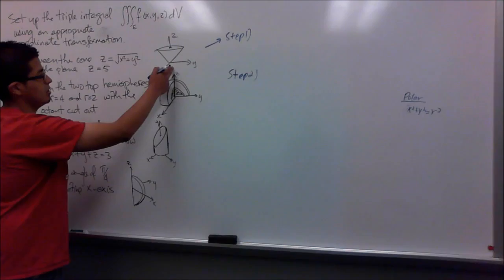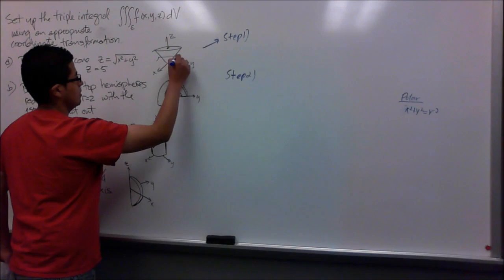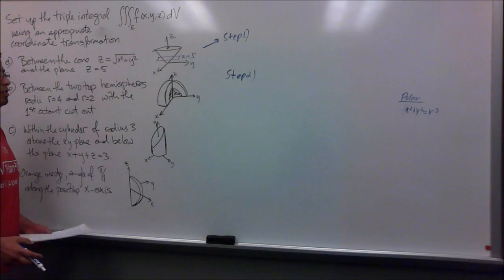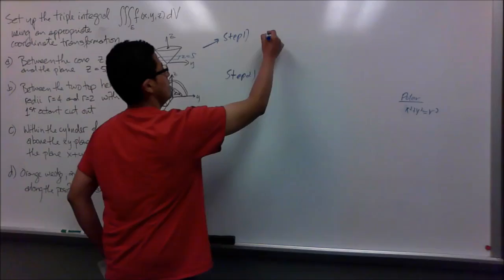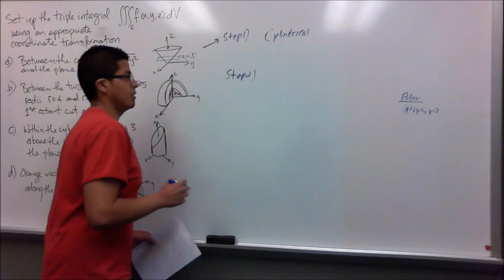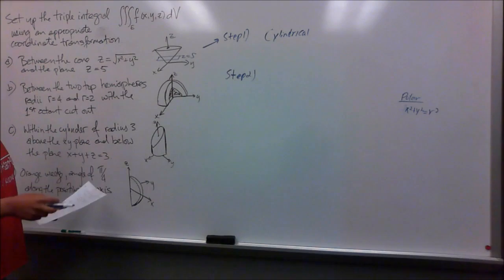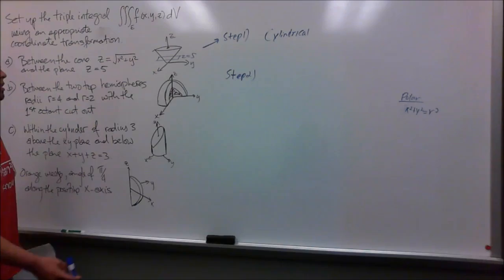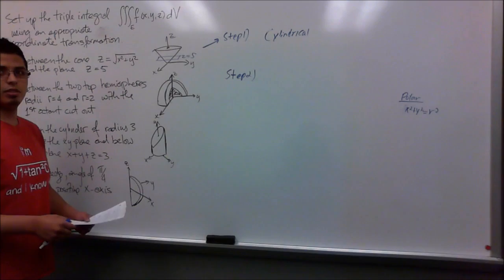Right here I have my picture of the cone and then I will draw in the plane z equals 5. The system I will be using for this solid is cylindrical. I'm choosing cylindrical because spherical would not be the best method since it does not involve a sphere here. So I will be using cylindrical.